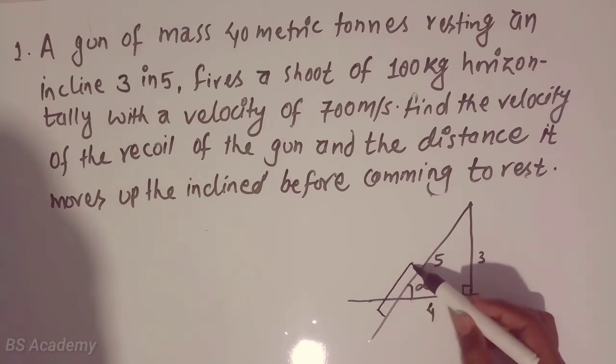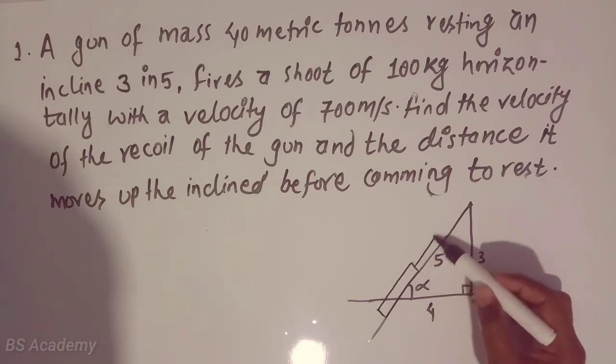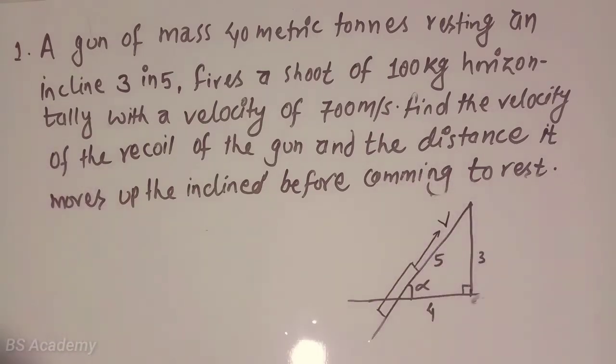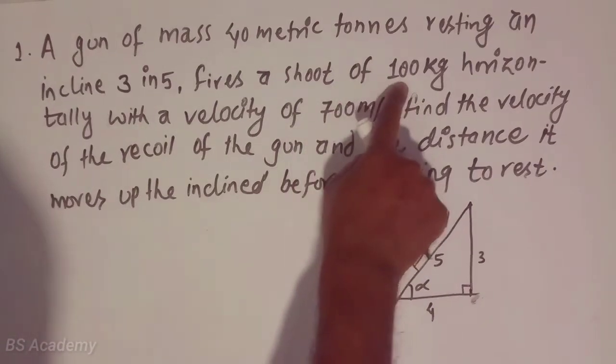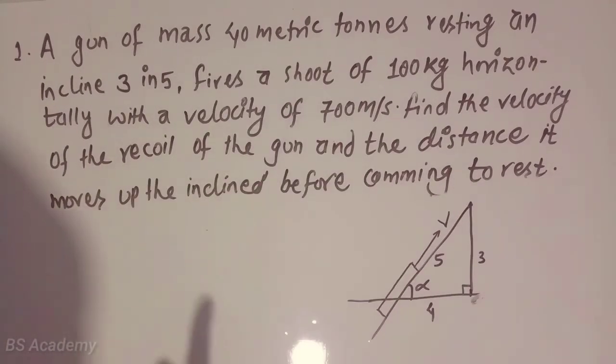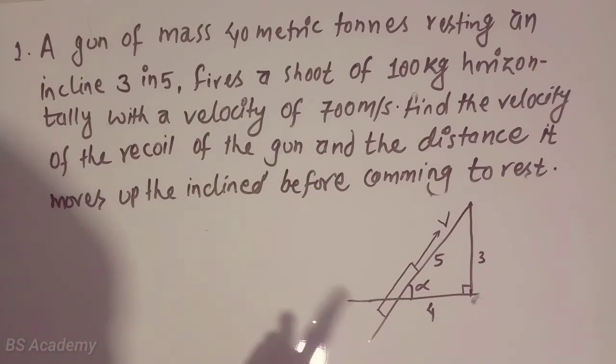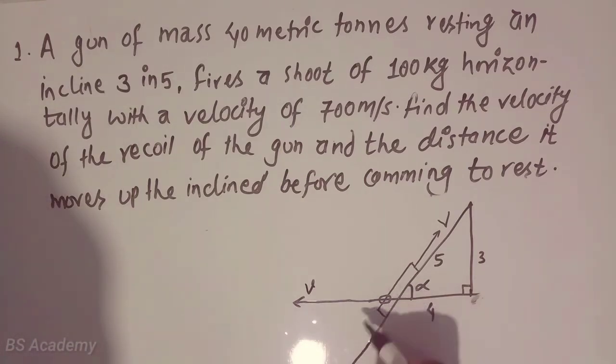The gun is resting on the incline 3 in 5. Suppose this is the gun and velocity of gun while reacting along the inclined plane, that means this will be the velocity of the gun. According to the question, it fires a shot of 100 kg horizontally with the velocity of 700 meters per second. Fire the shot horizontally, that means suppose there is a nozzle and this will be the direction of the bullet.